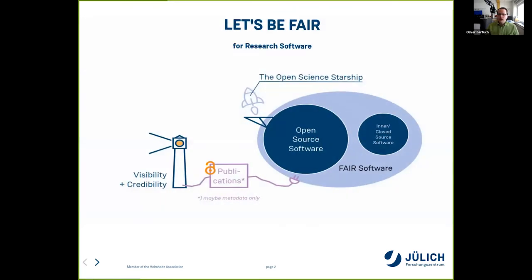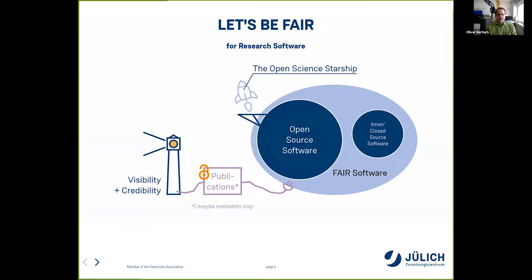Thank you, Anna. As you might have heard during Dan Katz's keynote on Tuesday, publication and citation of software is an important part of research. While open source research software is the base where the open science starship can launch, just being open is not enough. The key to visibility and credibility for research software engineers is publications, which rely on making software FAIR — including closed or inner source software — but requiring at least open and fair metadata.